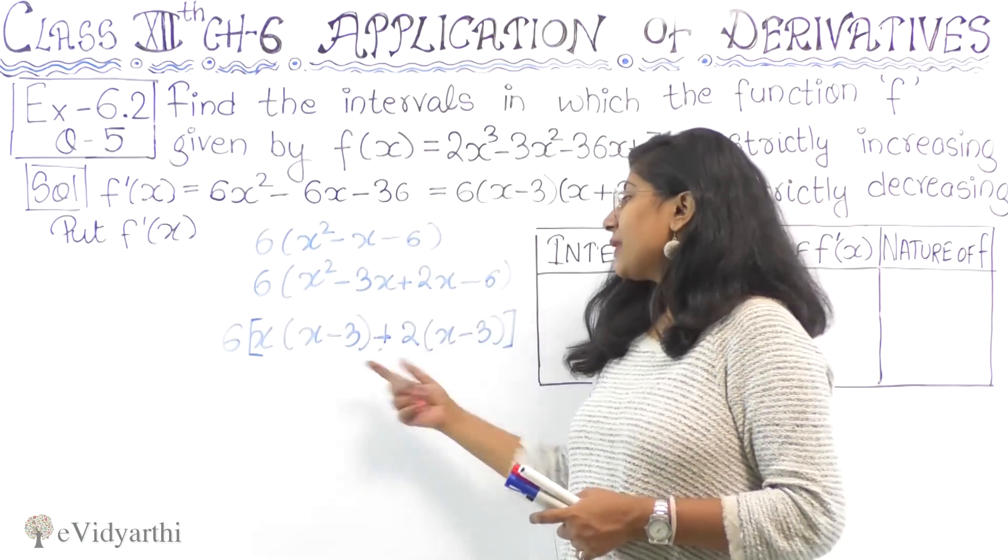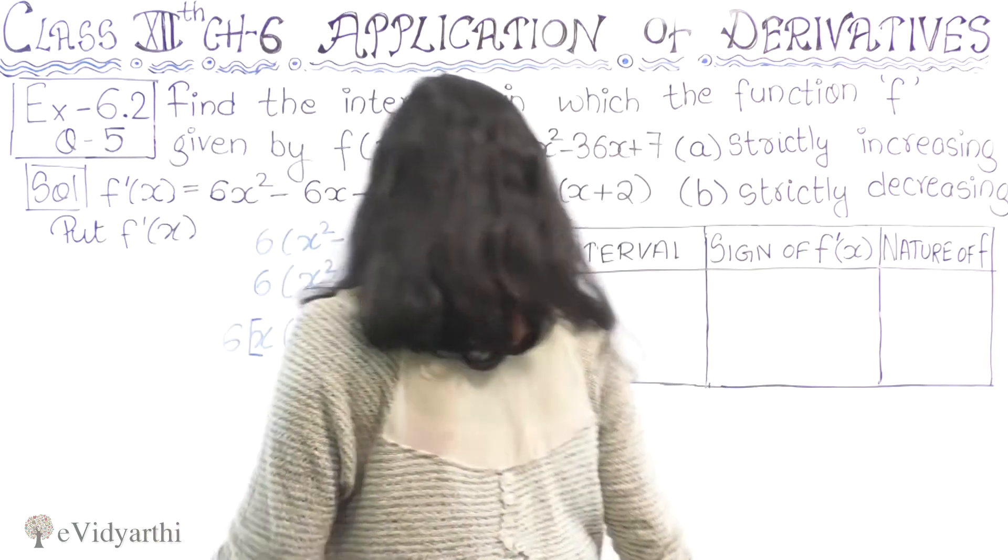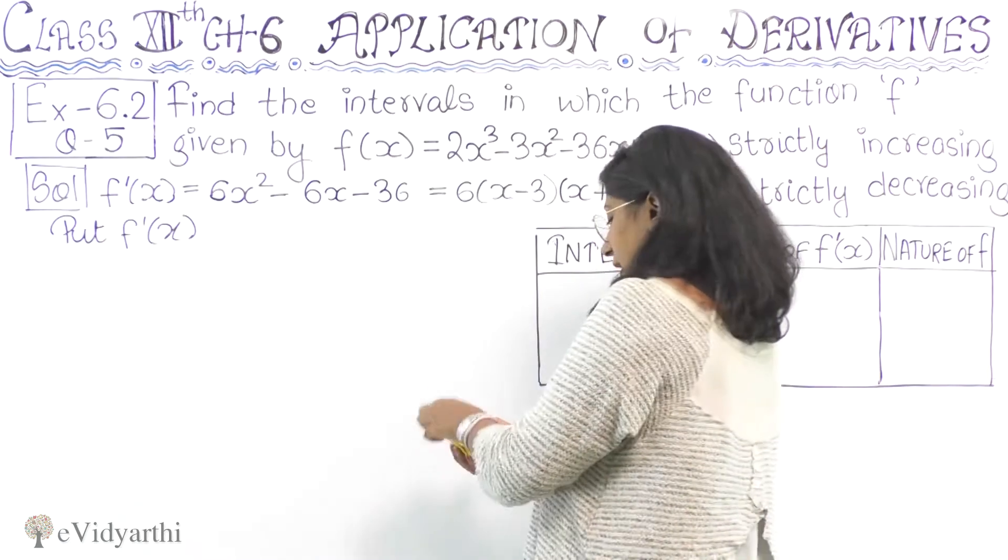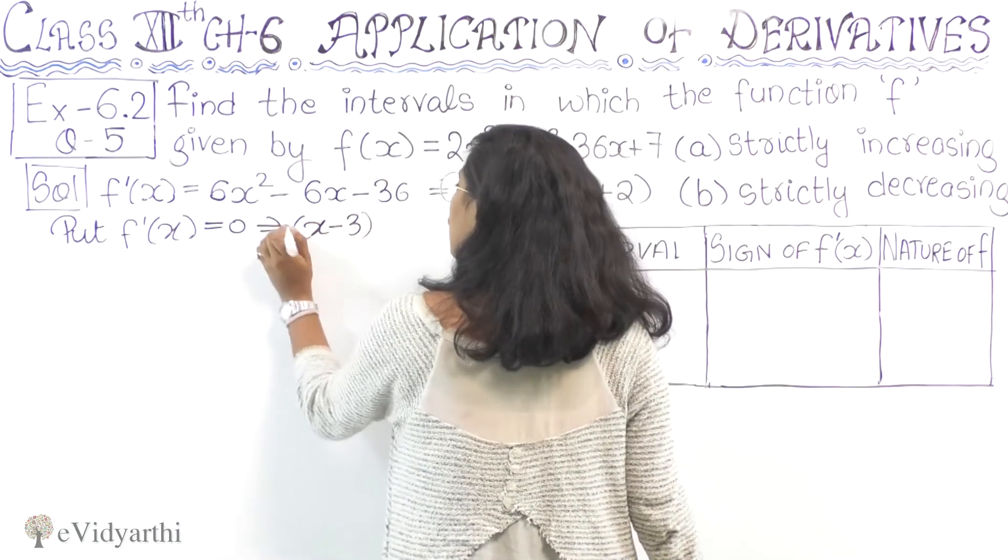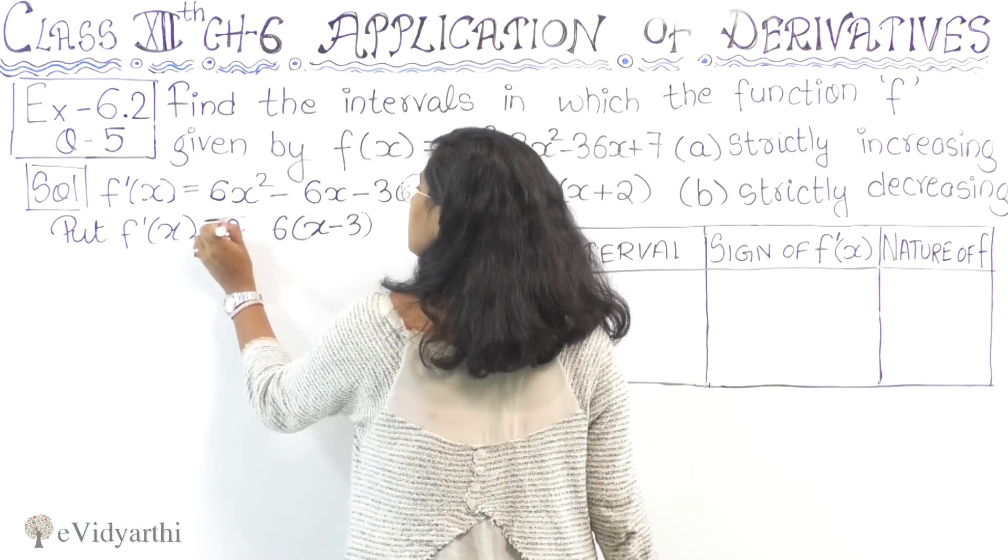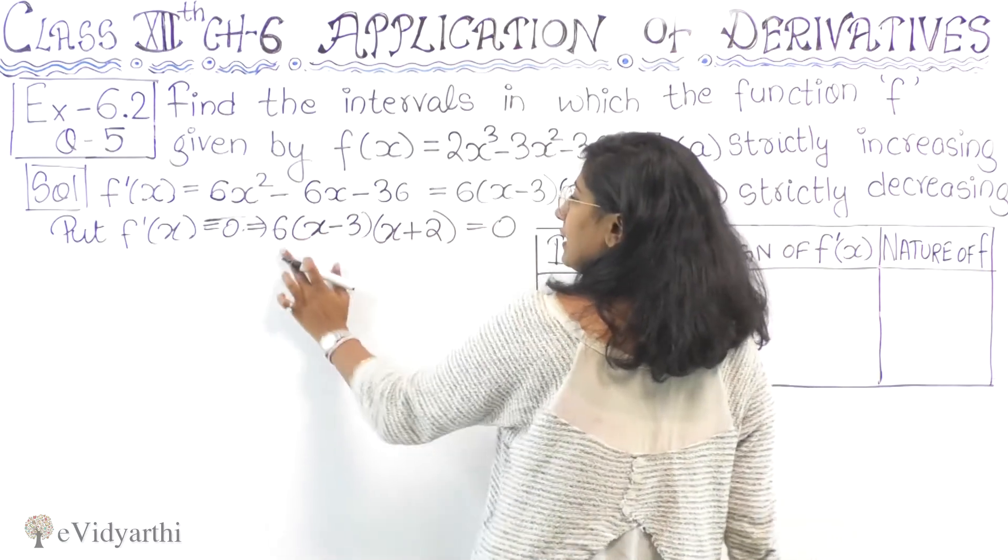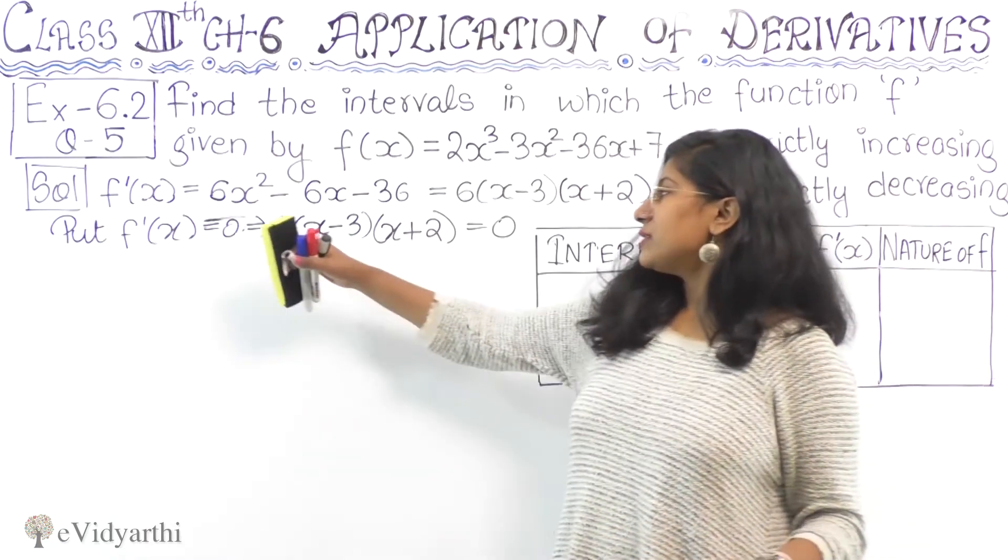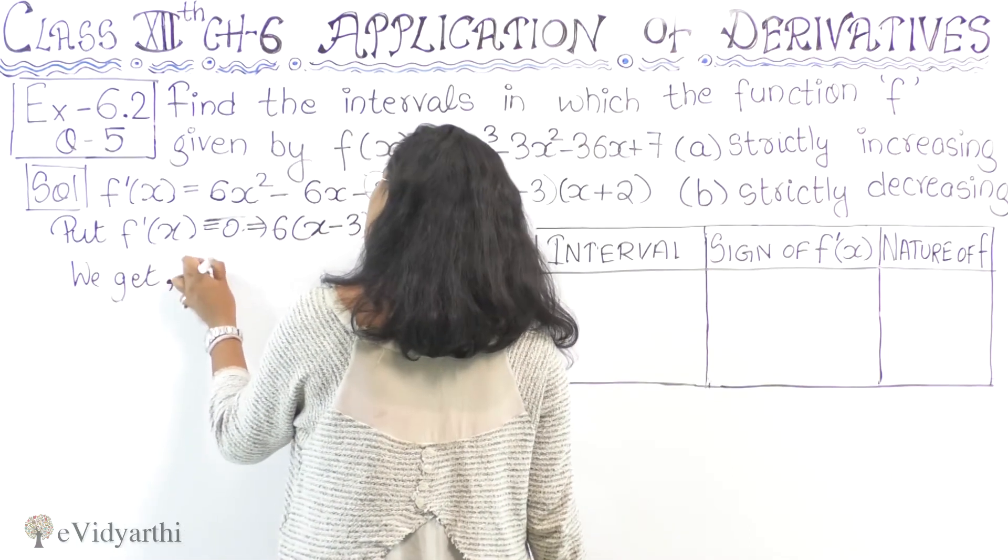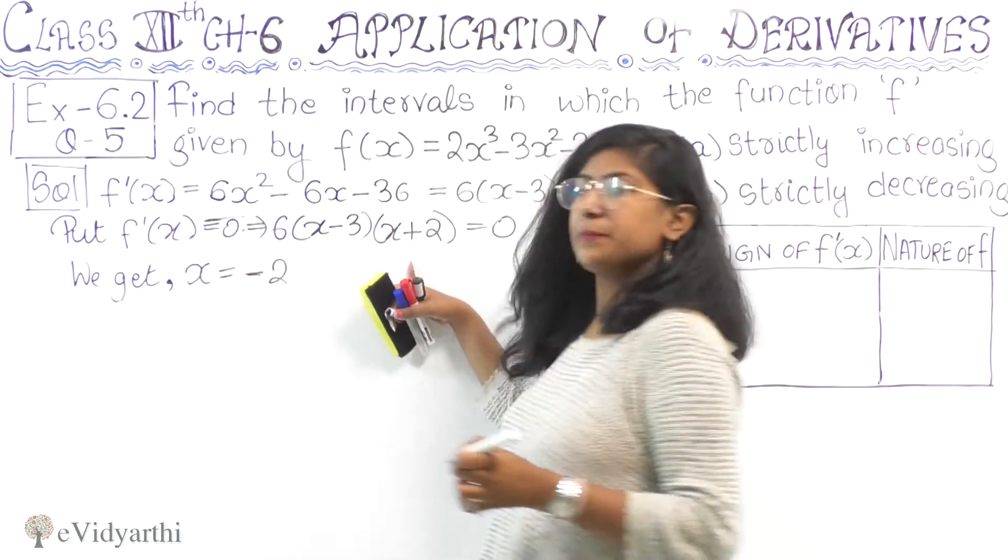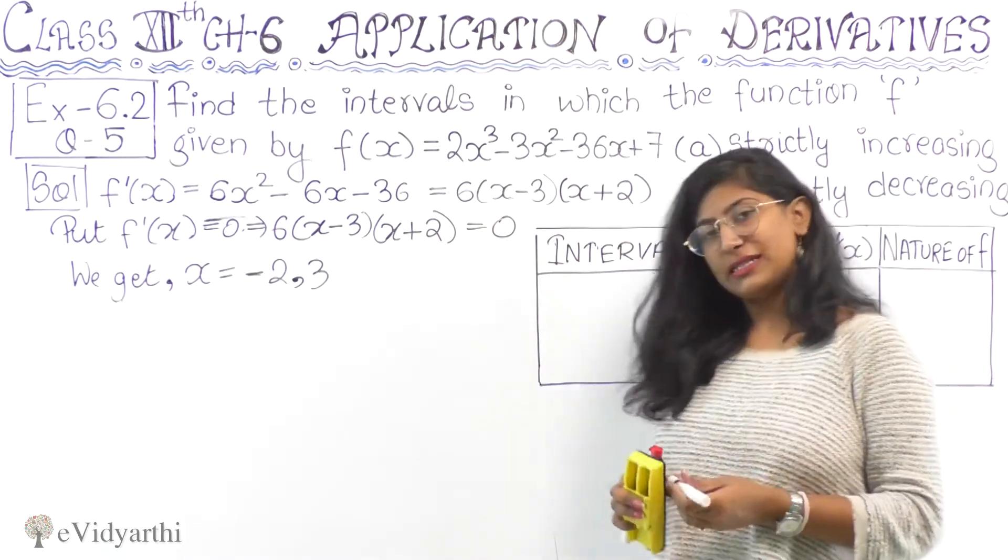So we have f'(x) = 0, which gives us 6(x - 3)(x + 2) = 0. We can divide by 6 since it's not zero. This gives us two values: x = -2 and x = 3. These are our critical points.